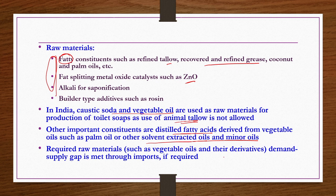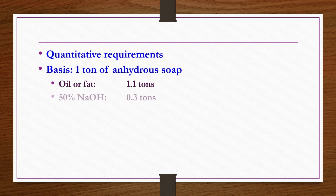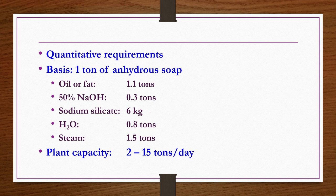Required raw materials such as vegetable oils and their derivatives — if any demand-supply gap exists — should be made up through imports if required. Quantitative requirements: to produce 1 ton of anhydrous soap, you require 1.1 tons of oil or fat, 0.3 tons of 50% NaOH, 6 kg of sodium silicate, 0.8 tons of water, and 1.5 tons of steam. Plant capacity is 2 to 15 tons per day. Sodium silicate is a very good economical filler and antioxidant agent; it also improves the hardness of the product.